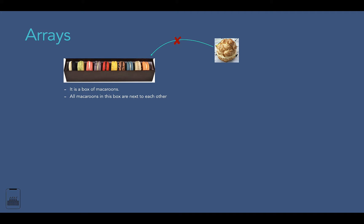Even if I remove one macaron from the box, its place will be empty and we can place another macaron there — this means the macarons are located contiguously in memory. The next property is that each macaron can be identified uniquely based on its location. For example, I can say this is the fifth macaron in this box, or that one is the sixth macaron, and so on.